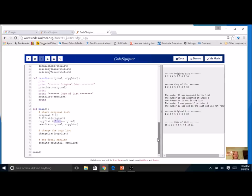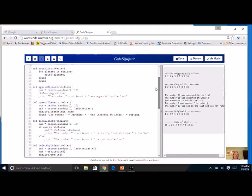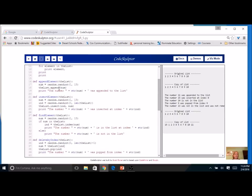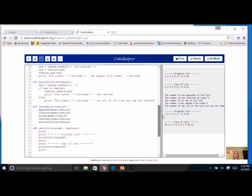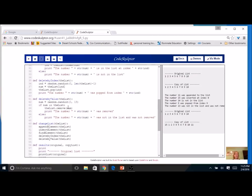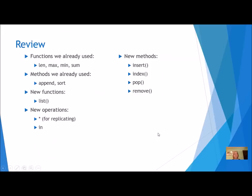Take your time with this program. Really look at what you're doing and see if you can summarize each of these functions — what they're doing and how they work. Here's a review of this lesson. Functions we were already using: len, max, min, sum. Methods we were already using: append and sort. New things we learned today: the list function, the replicating operator (asterisk), the in operator, and new methods insert, index, pop, and remove.